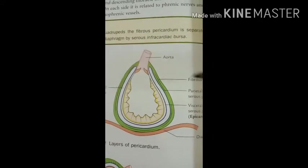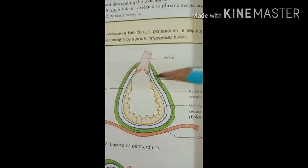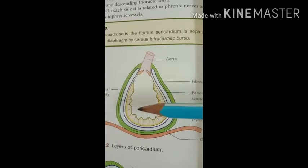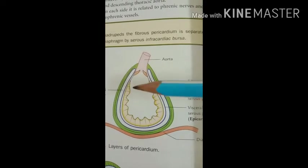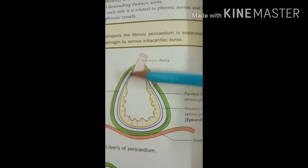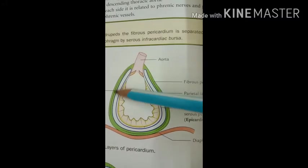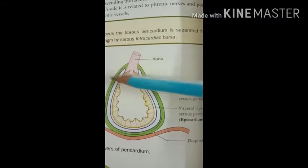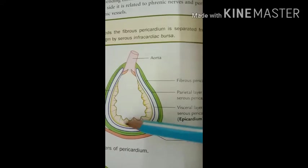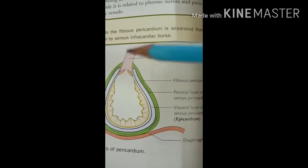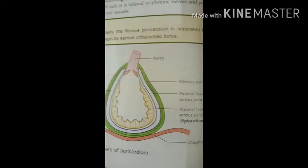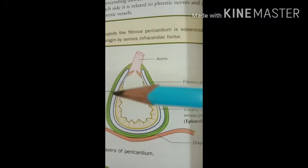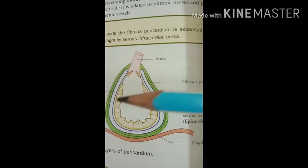The serous pericardium is made up of two layers: an outer layer called the parietal layer, and an inner layer which is attached to the heart wall called the visceral layer. So there is the parietal layer and the visceral layer.